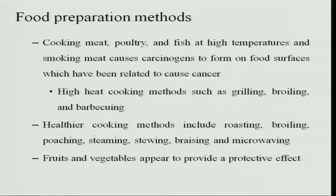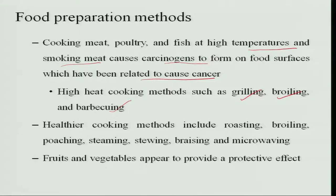Food preparation methods also add to carcinogens. Cooking meat, poultry, and fish at high temperatures, and smoking meat, forms nitrites which are carcinogens, and the charred portion on food also forms cancer-causing substances. High heat cooking methods like grilling, broiling, and barbecuing are very dangerous because they produce a lot of carcinogens. Healthier methods like roasting, poaching, steaming, stewing, braising, and microwaving are safe and do not produce carcinogens.